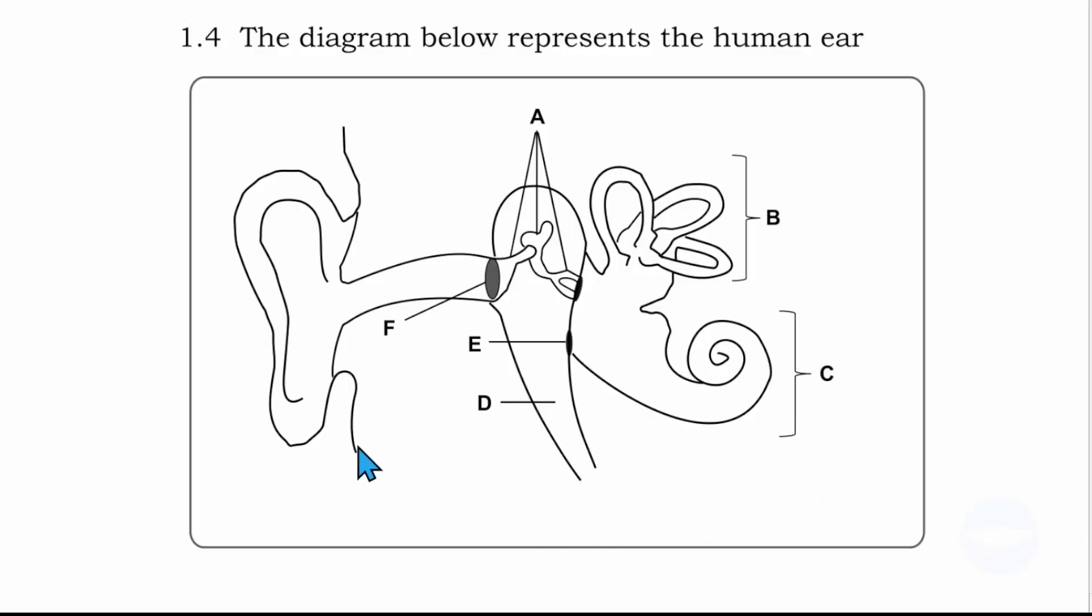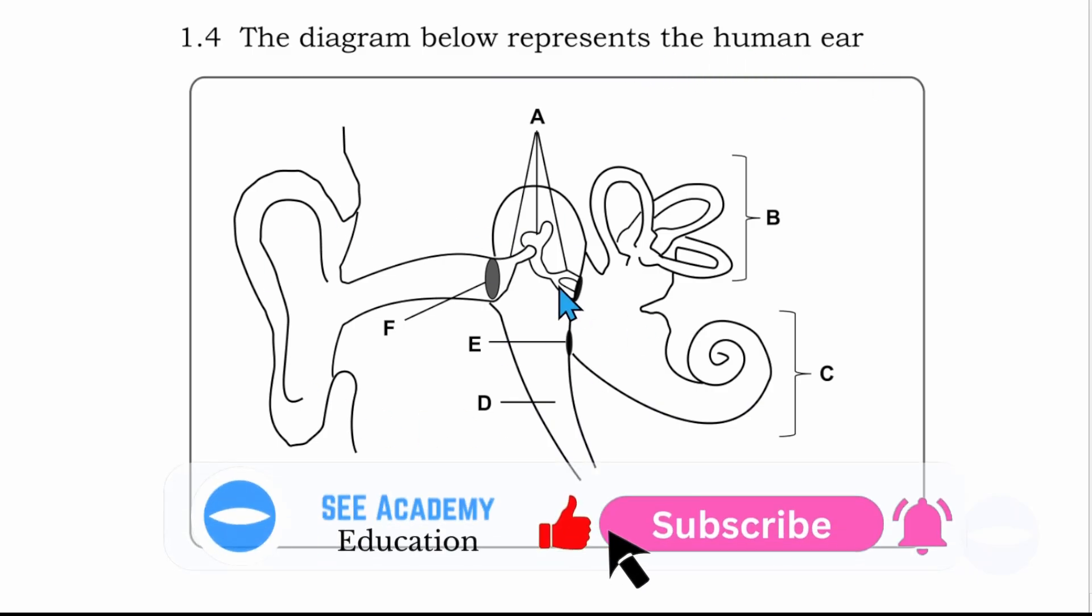Before I read the questions, let me give this diagram the labels. Question 1.4 says the diagram below represents the human ear. So this is a human ear and I have to give the labels.